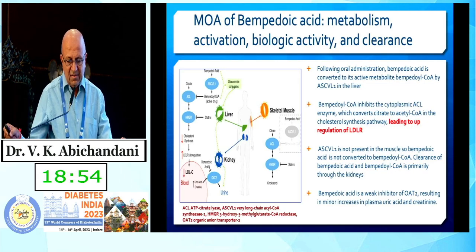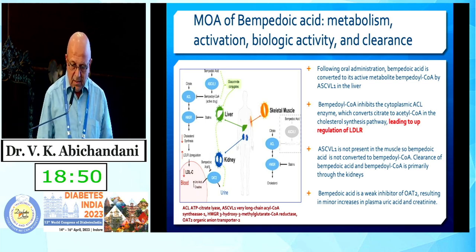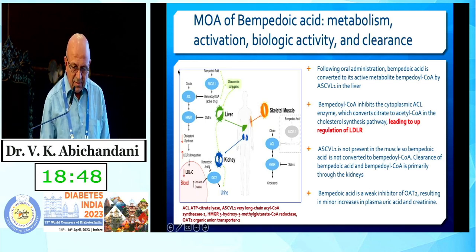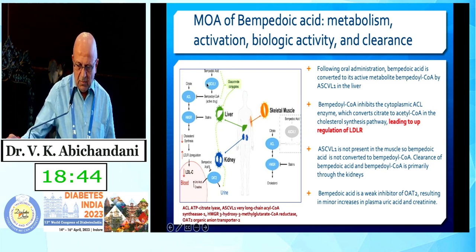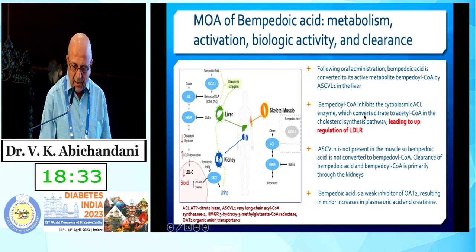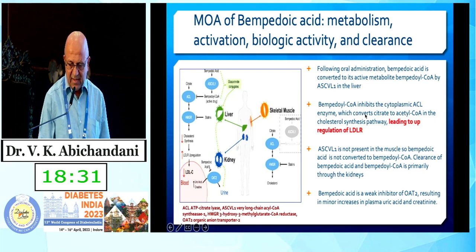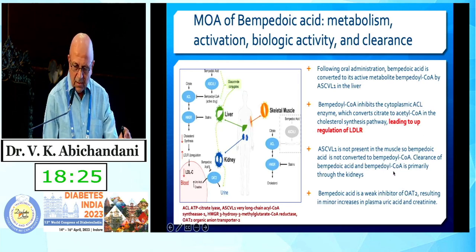This slide describes the mode of action. Following oral administration, Bempedoic Acid is converted to its active metabolite Bempedoic-CoA by ACSVL1 in the liver. ACSVL1 stands for very long chain acyl coenzyme A synthase 1. Bempedoic-CoA inhibits the cytoplasmic ACL, which triggers upregulation of LDL receptors.